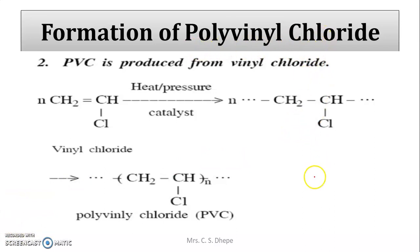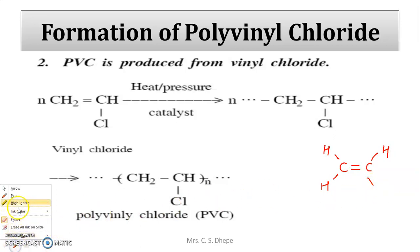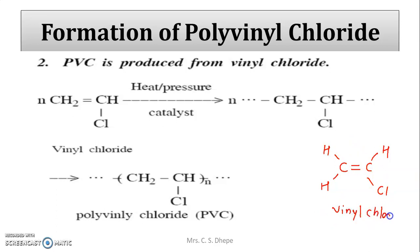Now we are going to start polyvinyl chloride (PVC). Looking at the structure of ethylene — when one of the hydrogen atoms is replaced by chlorine, it becomes vinyl chloride. This is your vinyl chloride monomer. For polyvinyl chloride, the structure is the same as ethylene, except one hydrogen is replaced by chlorine (Cl).